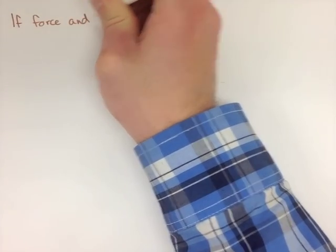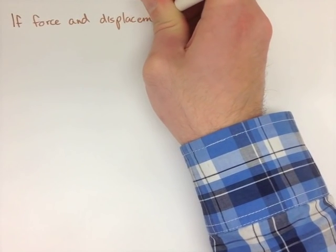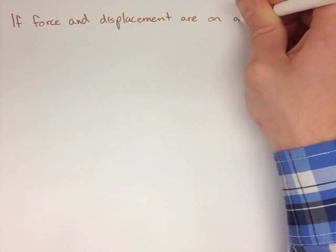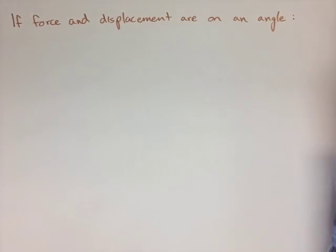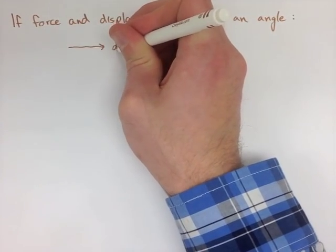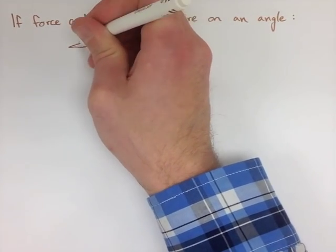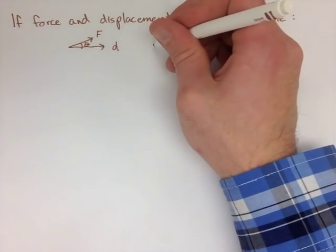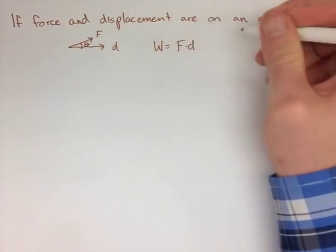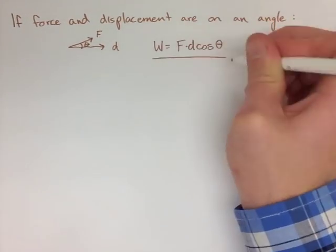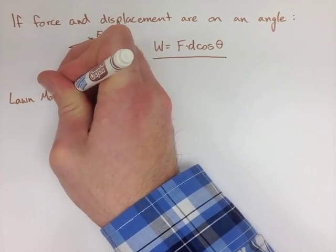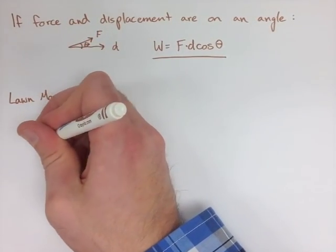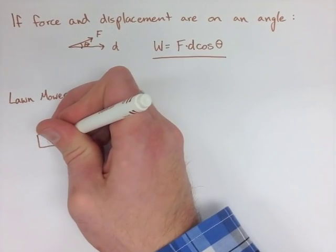Now if we're looking at a question where we have a force and a displacement but they're given an angle—they're not in line with each other—there's an easy way for us to account for this. Normally our displacement and force are in the same direction with some angle theta in between them. We just change our equation to be work equals force times displacement times cos theta.